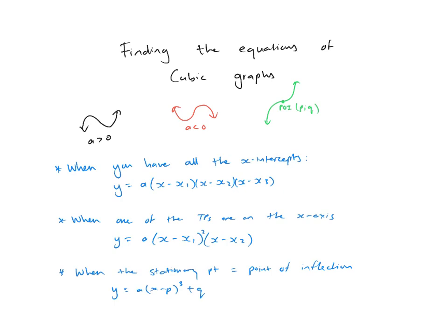So there are three equations. The first one is very basic: Y = A(x − x₁)(x − x₂)(x − x₃), where x₁, x₂, x₃ are all the x-intercepts. That's when you've got the x-intercepts of a graph — it's quite easy.